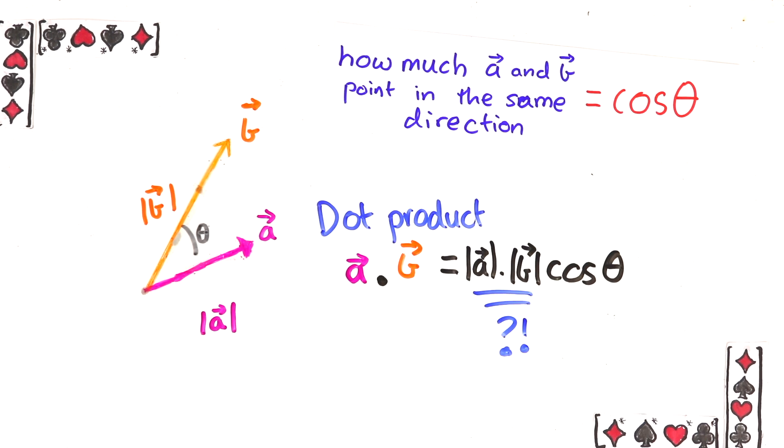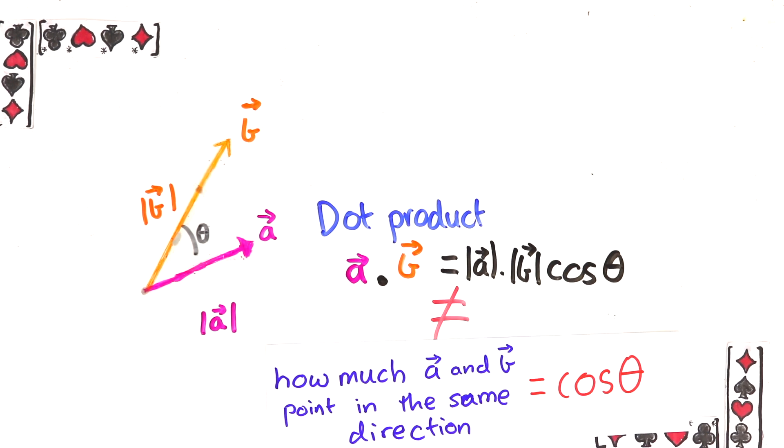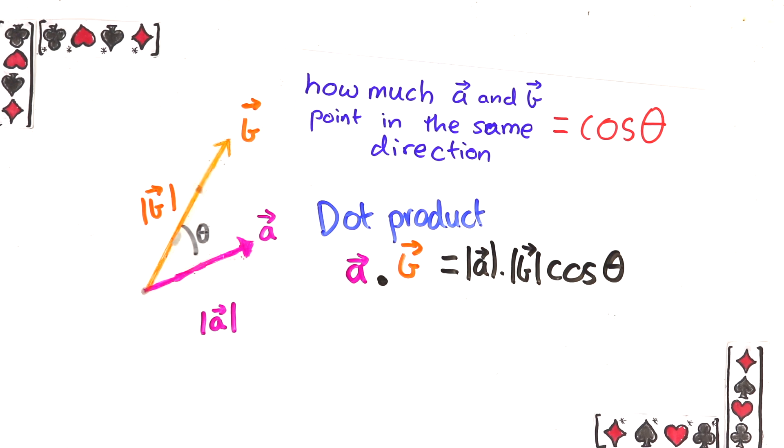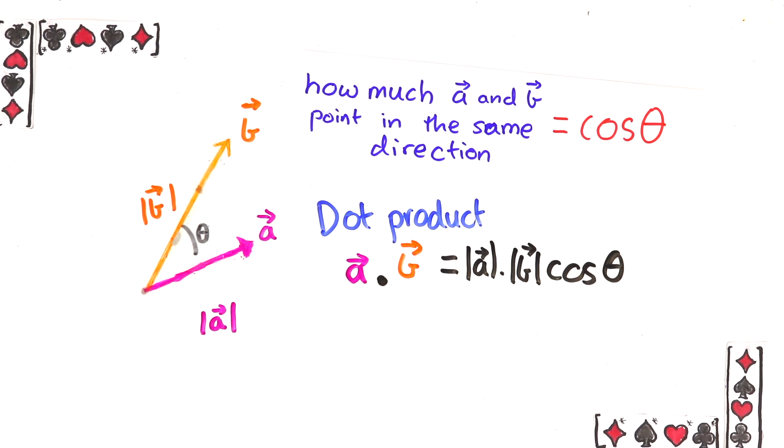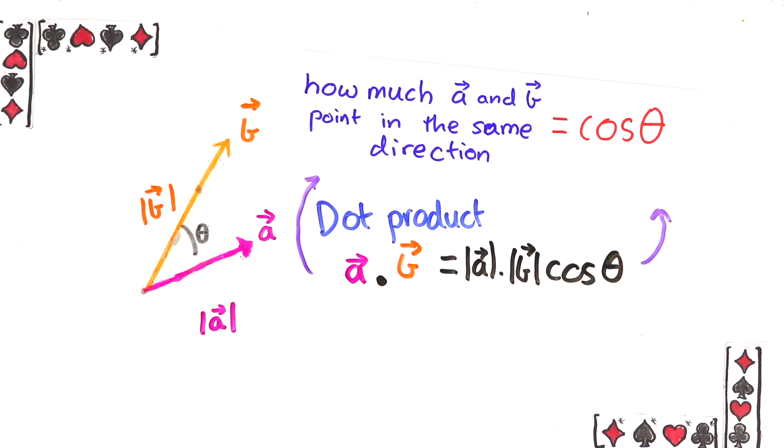Why tack on the lengths? Doesn't that ruin the dot product's interpretation as being about how much vectors point the same way? Well we added on because doing that makes the dot product a linear function which I'll explain in a sec and later on you'll see why that's such a boon. But right now I'm going to explain why in an important situation the dot product is still very much about how much two vectors point the same way. That situation is when you have an orthonormal basis.